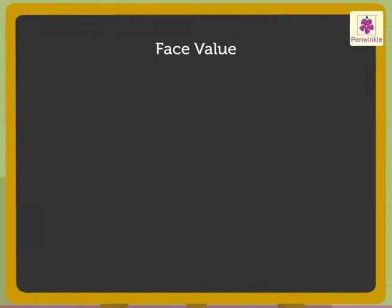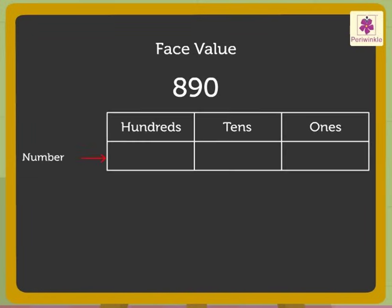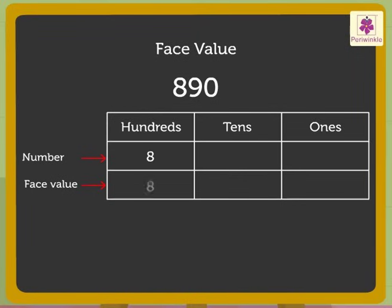Now, let us solve one more example. Look at the number 890. Here, the face value of digit 8 is 8. The face value of digit 9 is 9. The face value of digit 0 is 0.